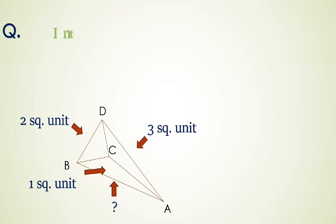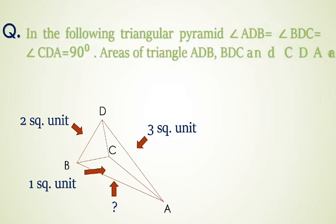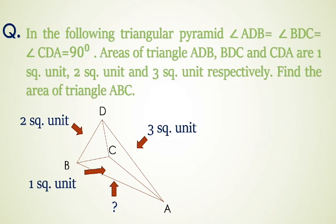In the following triangular pyramid, ∠ADB = ∠BDC = ∠CDA = 90°. Areas of triangle ADB, BDC, and CDA are 1 square unit, 2 square units, and 3 square units respectively.